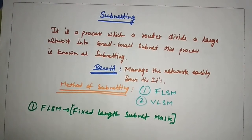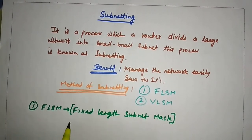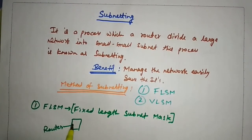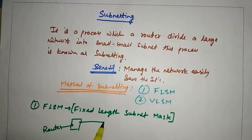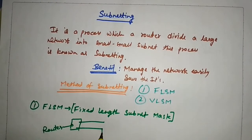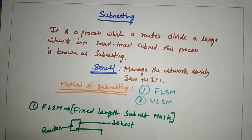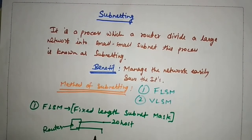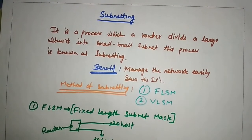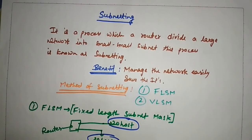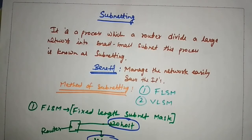In FLSM, the number of PCs in each network are the same. For example, this router has networks where one has 20 hosts and another has 20 PCs — so the number of PCs in each network is going to be equal.